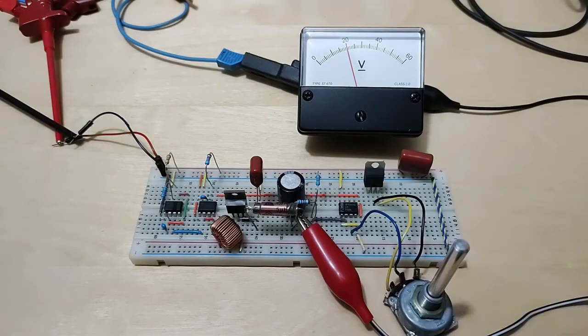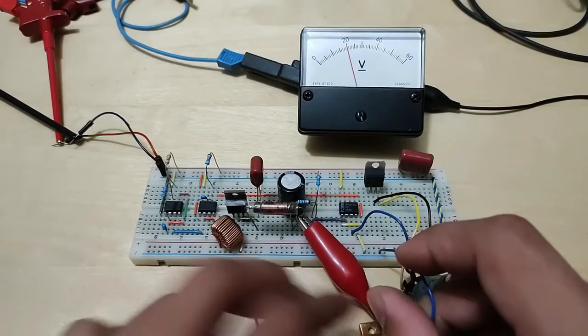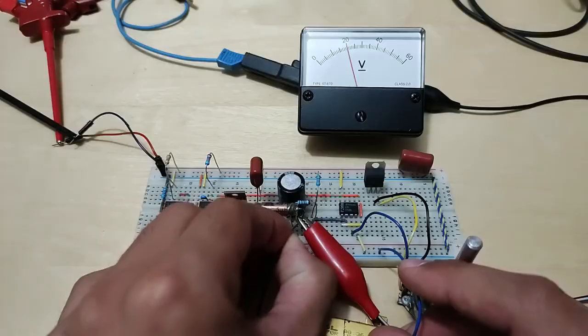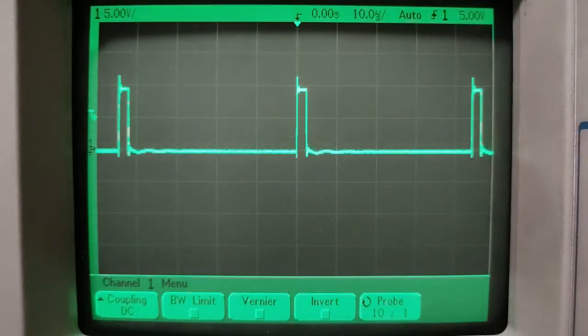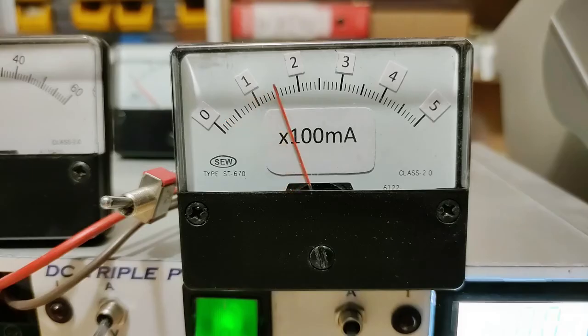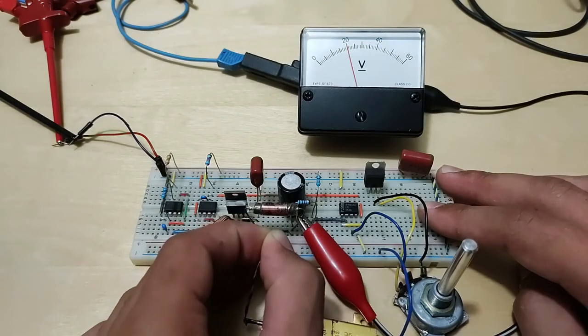Now, for example, if we attach or detach the load here, you can see that the output voltage remains constant. But if we probe the PWM signal on pin 3 of the second 555, you can see that the duty cycle changes to regulate as we were explaining. Also, the input current to the supply varies a lot to be able to keep up with the demand on the output.